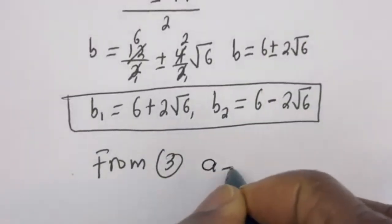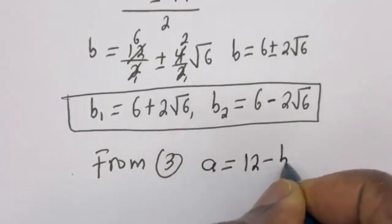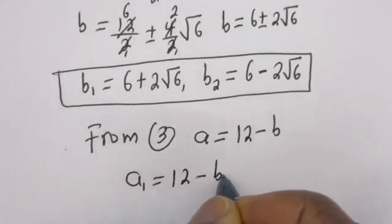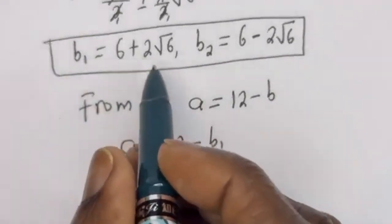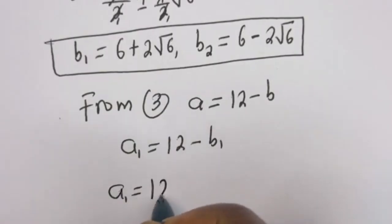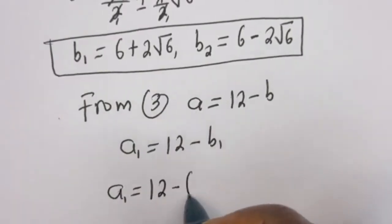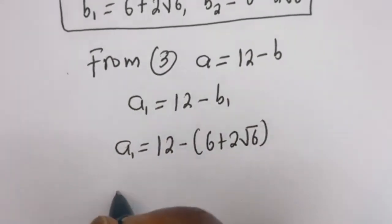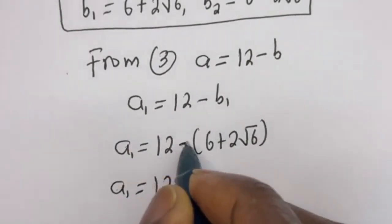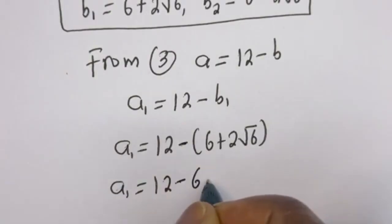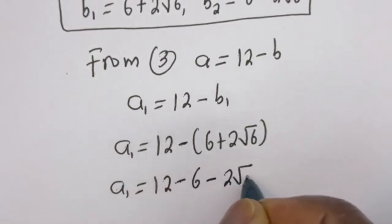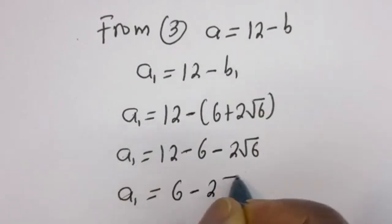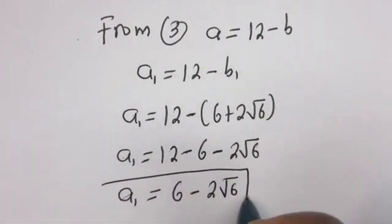Then a equals 12 minus b. So a1 equals 12 minus b1. When b1 is 6 plus 2 root 6, a1 is equal to 12 minus (6 plus 2 root 6), which gives 12 minus 6 minus 2 root 6, so a1 equals 6 minus 2 root 6.